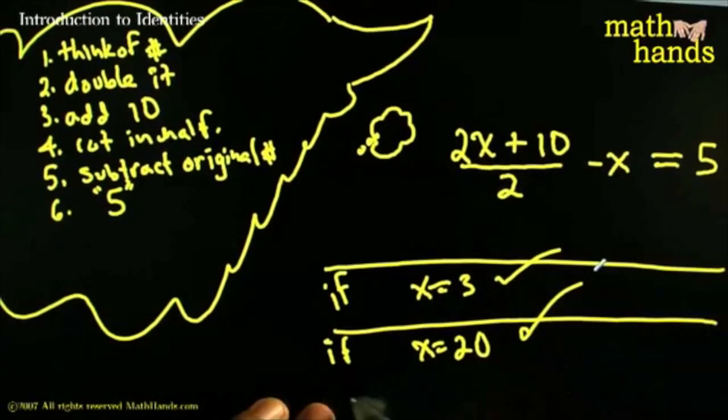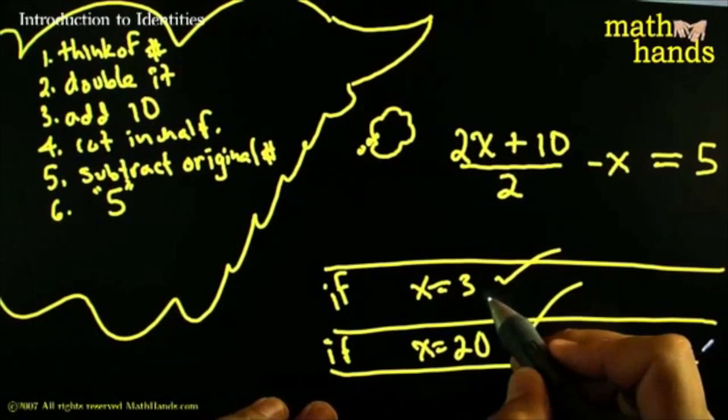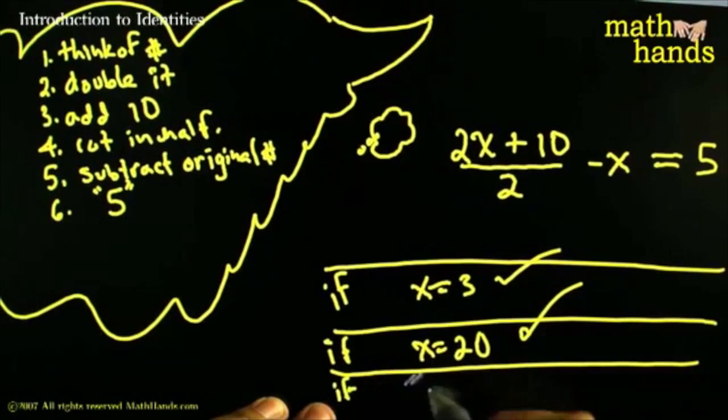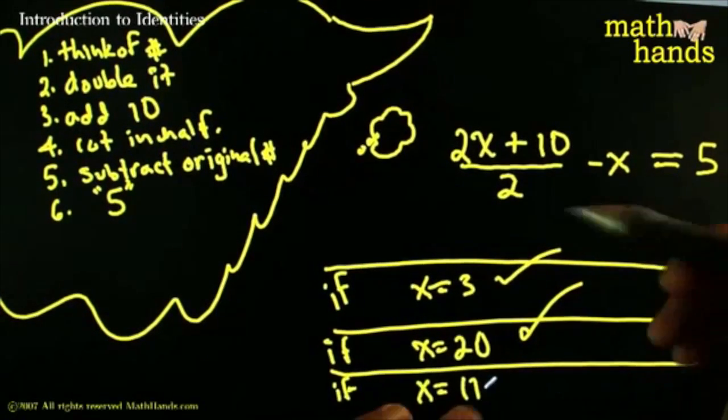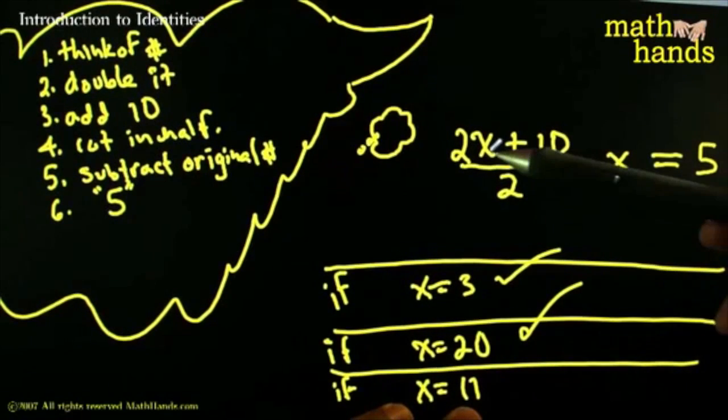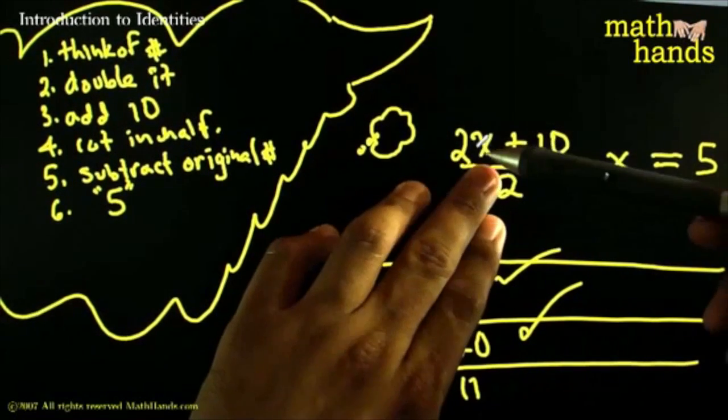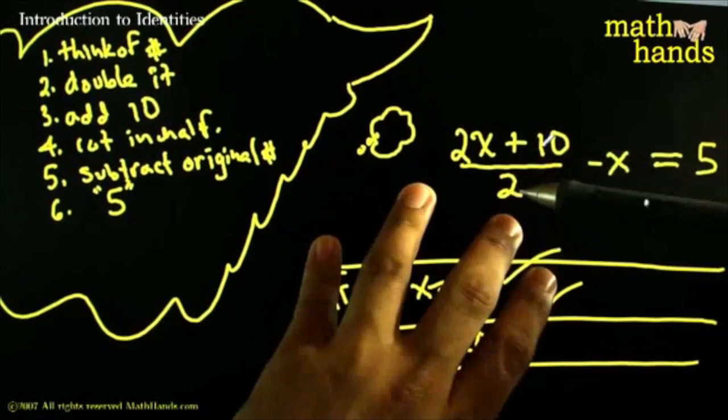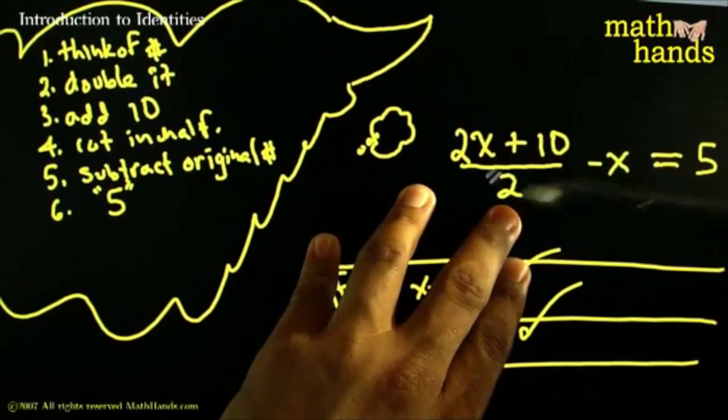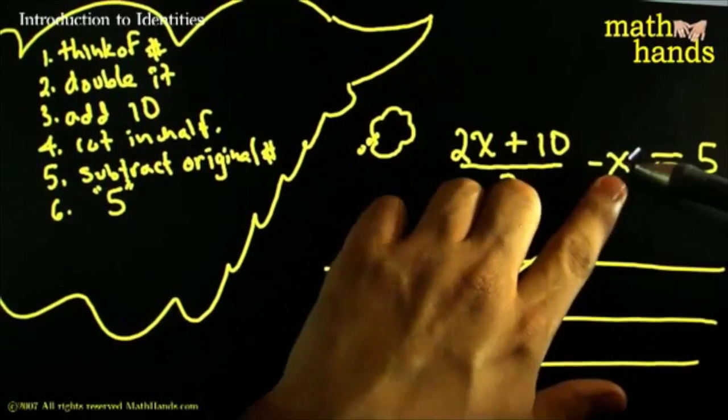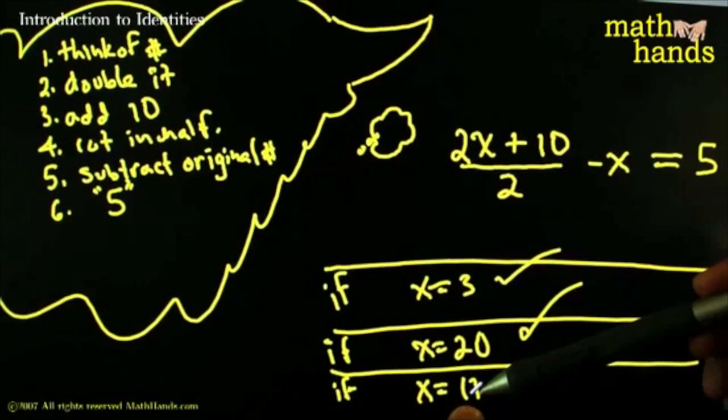OMG. It worked for x equals 20 as well. What if we pick some weird number like, say, x equals 11? Oh, I don't think it will work here. Let's try it. If x equals 11, 2 times it gives you 22 plus 10 gives you 32. Divided by 2 gives you 16. Take away the original number. 16. Take away 11.